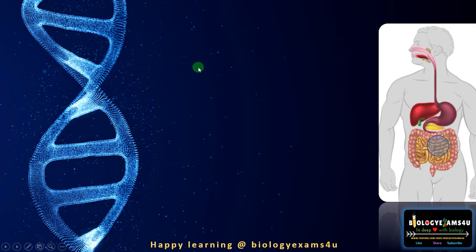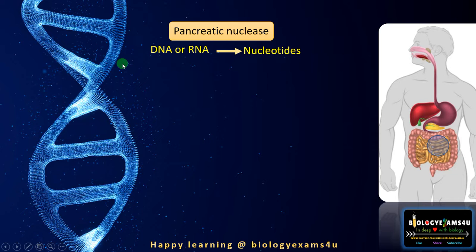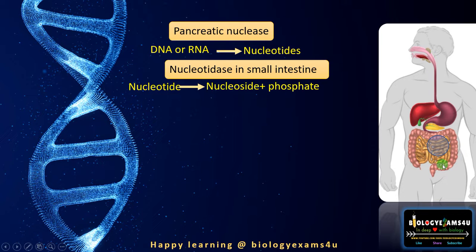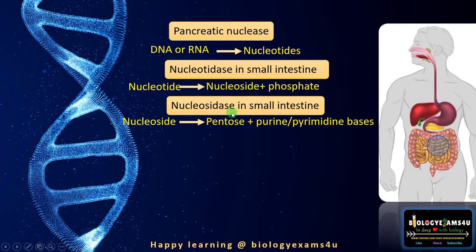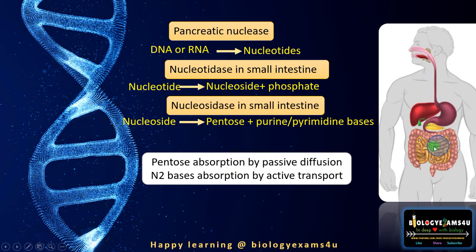The next topic is the absorption and digestion of nucleic acids. Nucleic acids include RNA and DNA — deoxyribonucleic acid and ribonucleic acid — which are broken down into nucleotides by pancreatic nuclease. Then in the small intestine, an enzyme called nucleotidase converts nucleotides into nucleosides and phosphate. Another enzyme, nucleosidase, converts nucleosides into pentose sugars and nitrogenous bases — purine and pyrimidine bases — which can be easily absorbed. The absorbable forms are pentose sugars and nitrogenous bases.